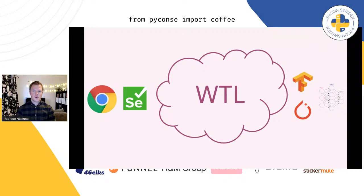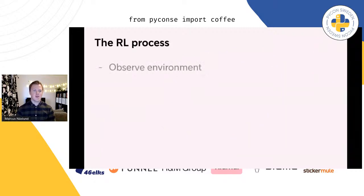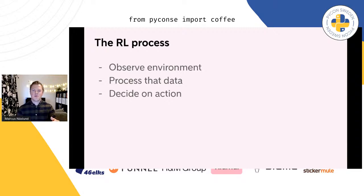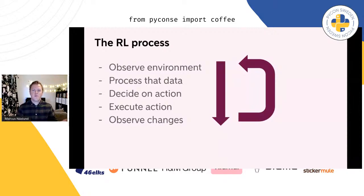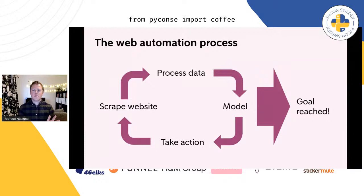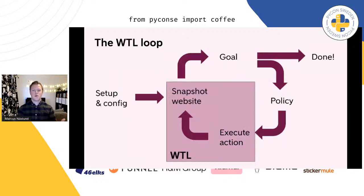In reinforcement learning, the basic idea for an intelligent agent is to observe your environment, process that data, decide on some action, execute that action, and observe the changes you cause to your environment — doing this essentially in a loop. By doing this over and over again in different environments, you can hope to learn what takes you towards your end goal and generalize into something. We've already seen this translated to a website setting where observing your environment means scraping a page, and the action space is limited to things like clicks and form fillings. This happens to also be the main loop for the Web Traversal Library.